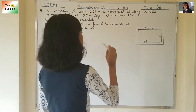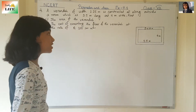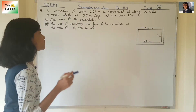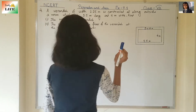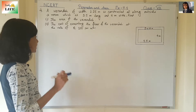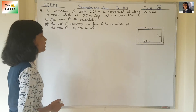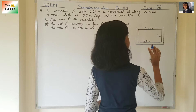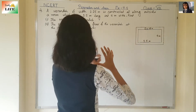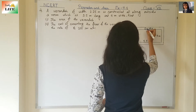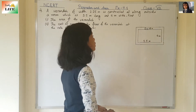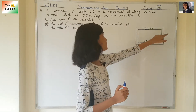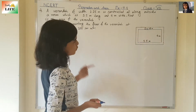A veranda of width 2.25 meters is constructed all along outside a room which is 5.5 meters long and 4 meters wide. Find: number 1, the area of the veranda; number 2, the cost of cementing the floor of the veranda at the rate of rupees 200 per meter square. So this is the room of length 5.5 meters and breadth 4 meters, and a veranda is constructed all along outside the room whose width is 2.25 meters.